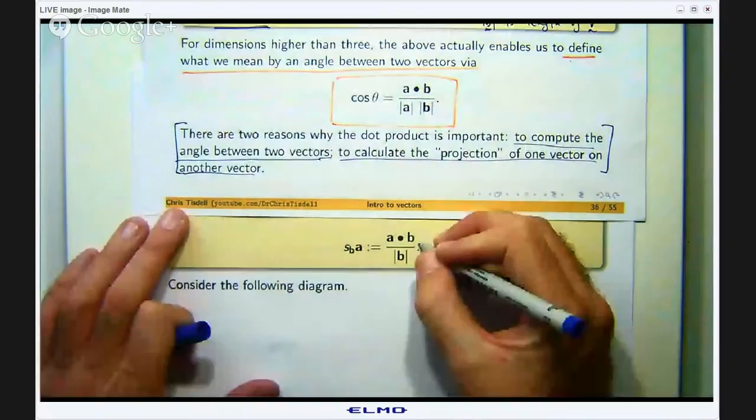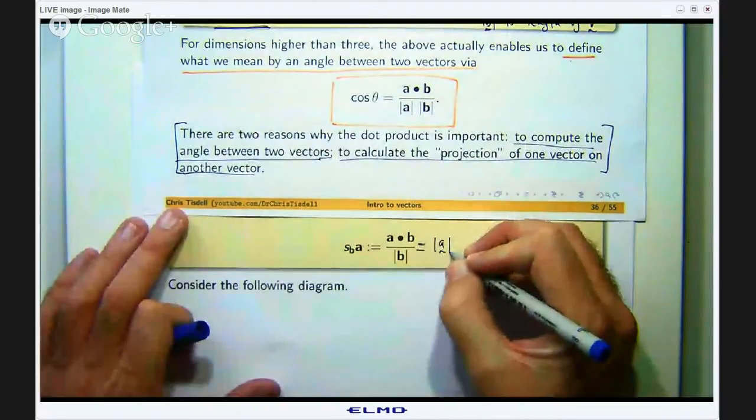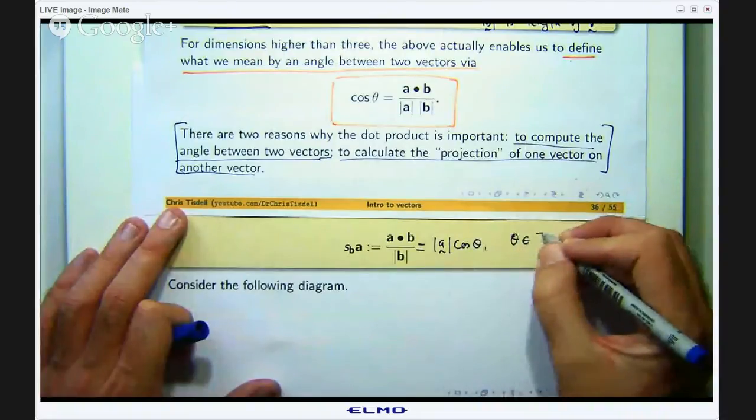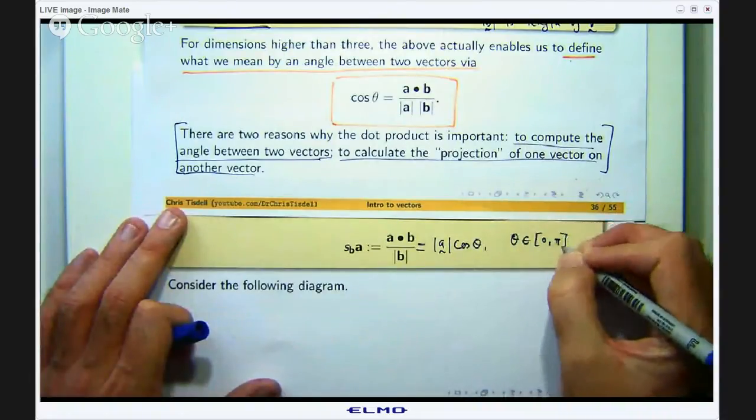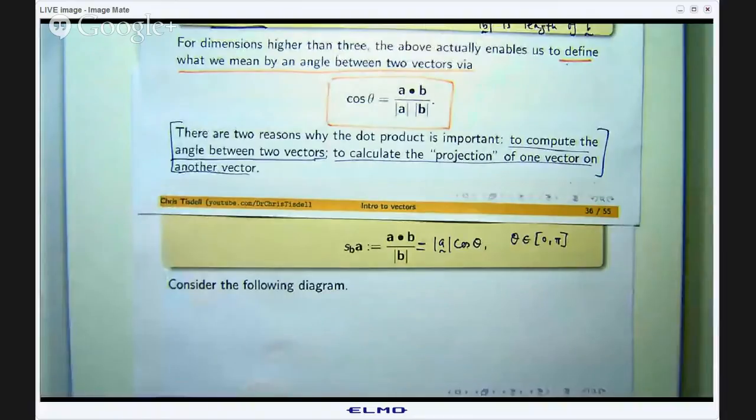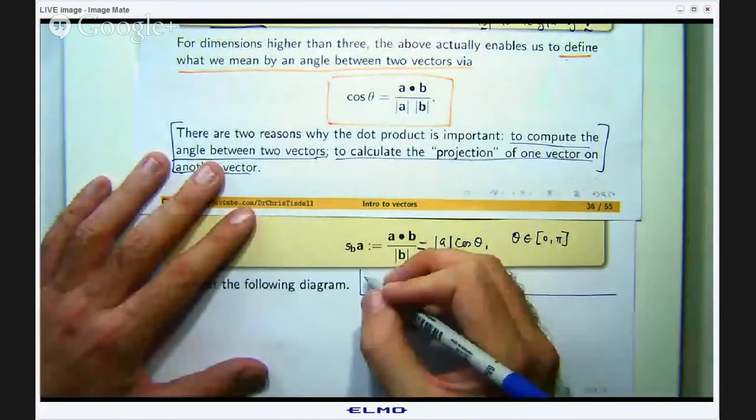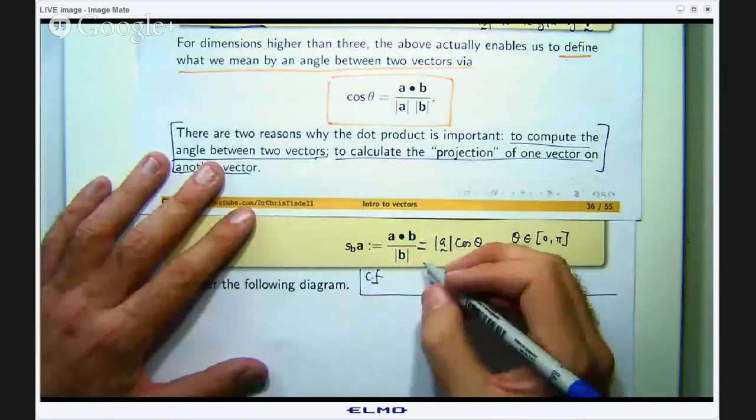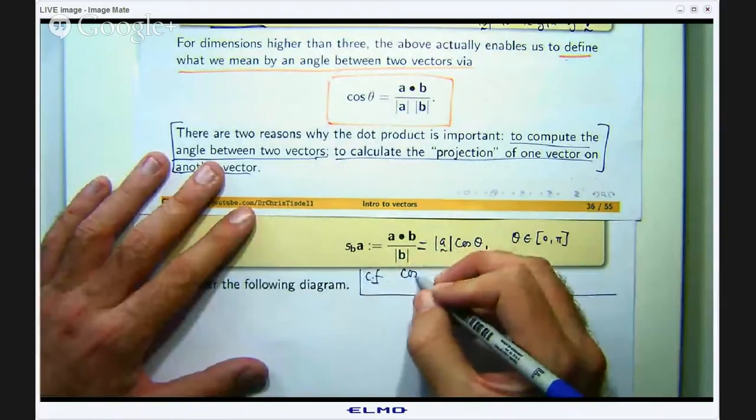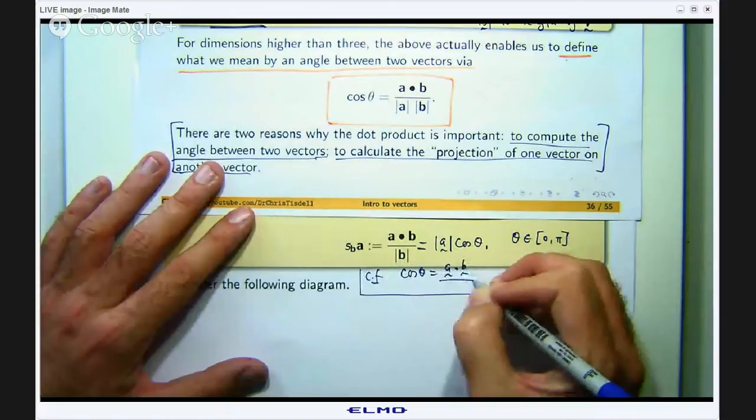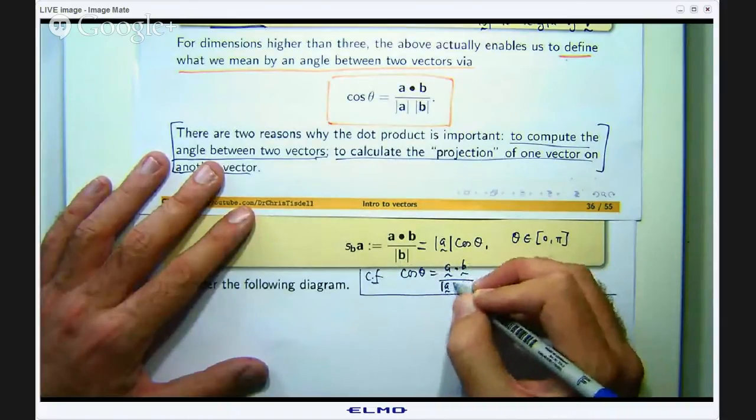And theta is the angle between the vectors. This comes from cosθ equals the dot product of the two vectors divided by the product of the lengths.